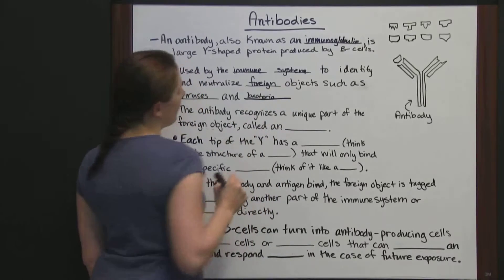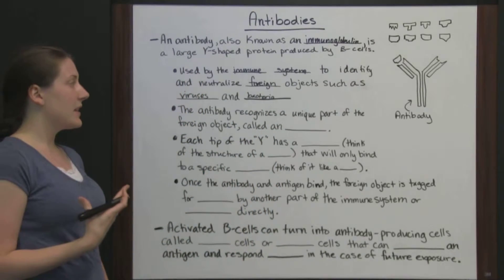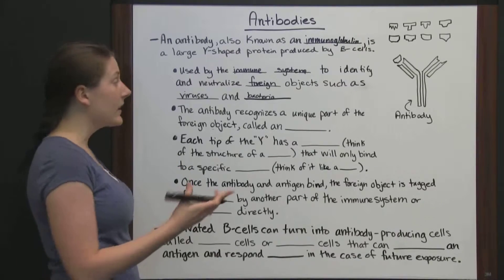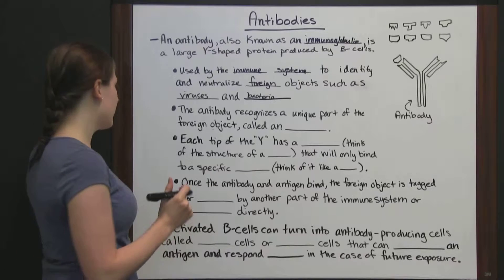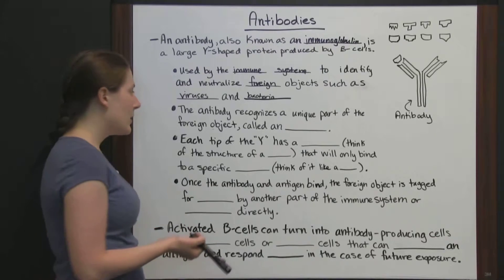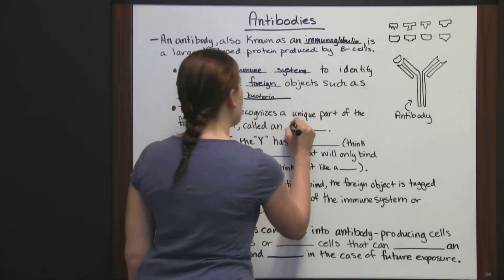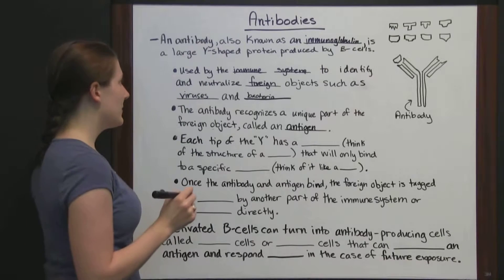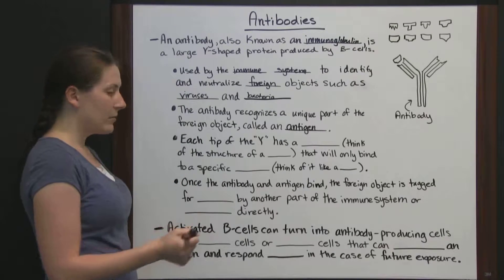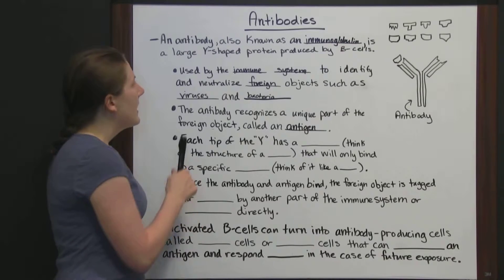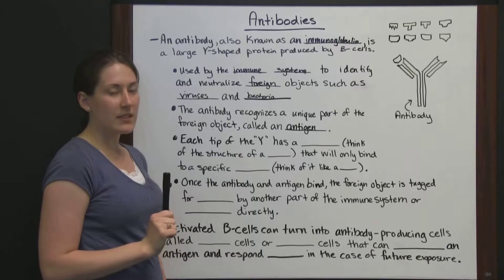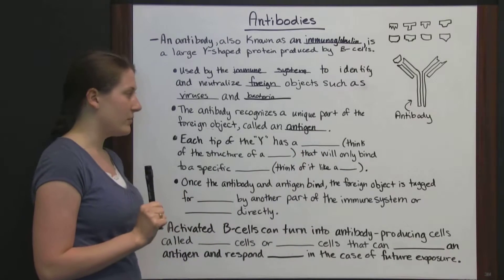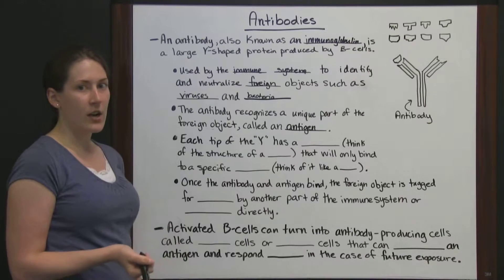If you inhale or ingest something that is foreign to your system, antibodies are going to kick in and try to neutralize these foreign objects. The antibody recognizes a unique part of the foreign object called an antigen. It's important to remember the difference between these two since antigen and antibody are both similar to each other. The antigen is a specific part of that foreign object that we're going to try to neutralize.